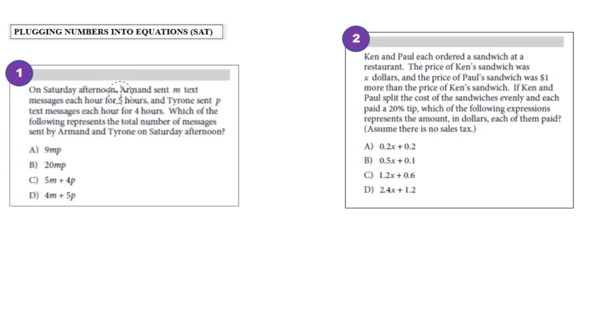On Saturday afternoon, Armand sent M text messages each hour for five hours and Tyrone sent P text messages each hour for four hours. Which of the following represents the total number of messages sent by Armand and Tyrone on Saturday afternoon? Now if you're not sure how to construct this equation, we could try some numbers.